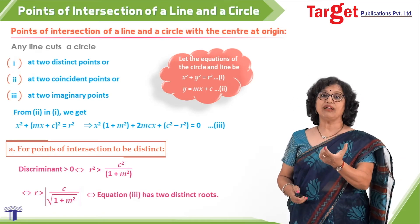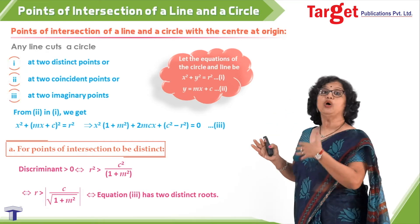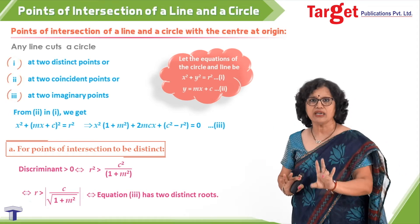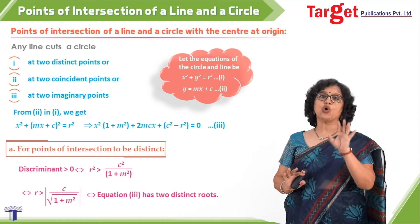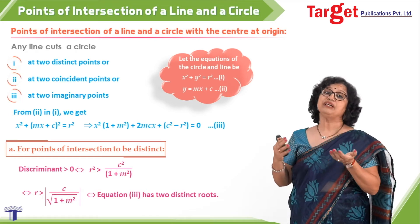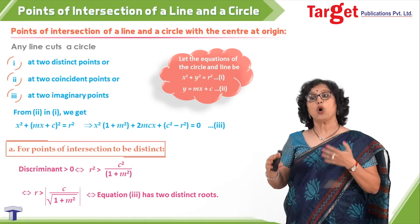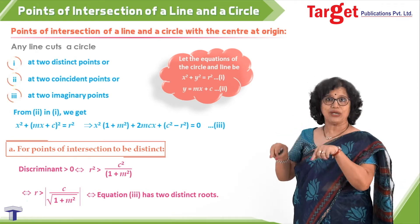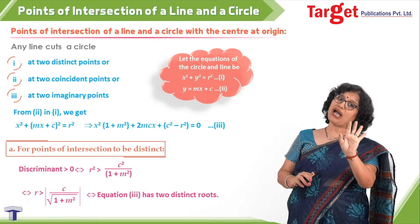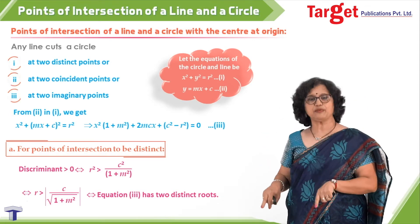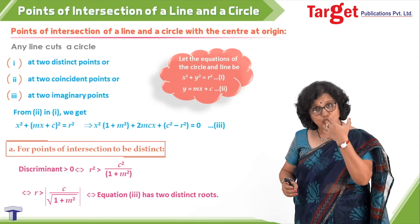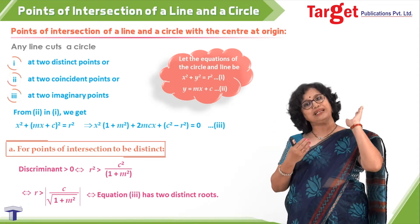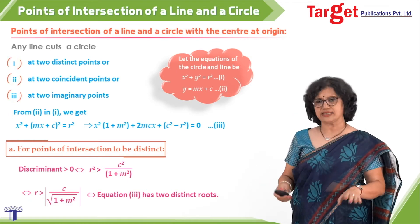This is equivalent to the equation having two distinct roots. Understand that all are one and the same: whether you say the equation has two distinct roots, or give the geometrical interpretation that the line meets the circle at two distinct points, or state the condition r greater than the absolute value of c upon the square root of one plus m squared — these all mean the same thing.